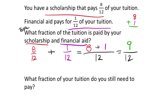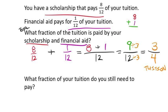Nine-twelfths is not our final answer because we need to simplify. Nine and twelve are both divisible by three. Nine divided by three is three, and twelve divided by three is four. So three-fourths of your tuition will be paid by scholarship and financial aid. We label the answer in tuition.